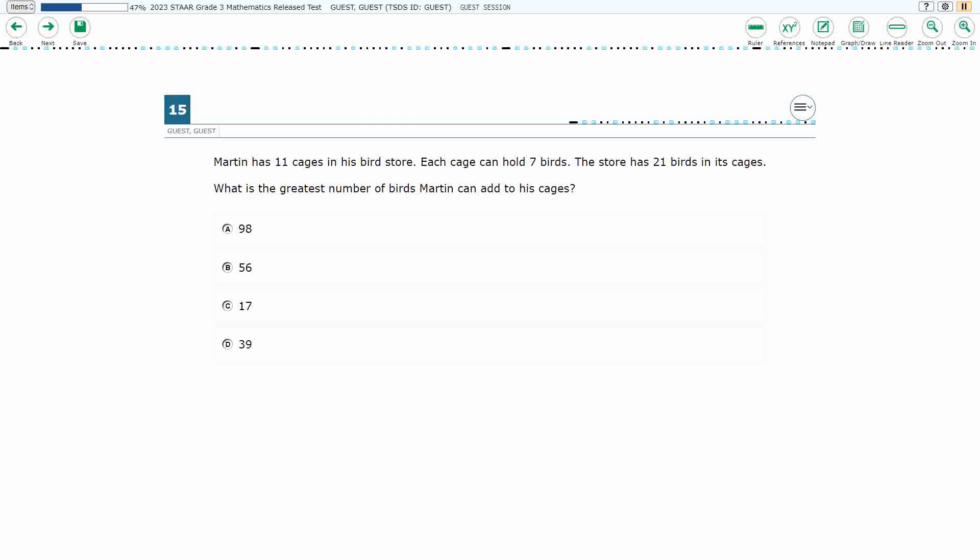All right, so we've got Martin has 11 cages. Each cage can hold 7 birds, the store has 21 birds in its cages. What is the greatest number of birds that Martin can add? Okay, that's a good question here.